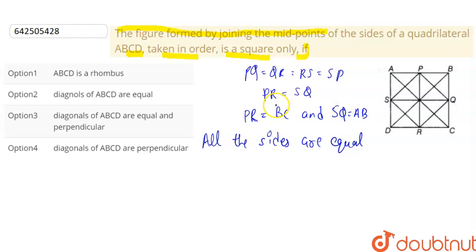So PR is equal to SQ, so all the sides of the quadrilateral are equal. So it can be a rhombus or it can be a square.